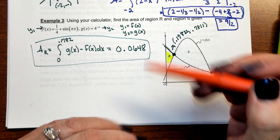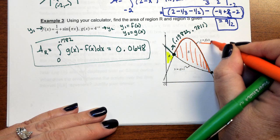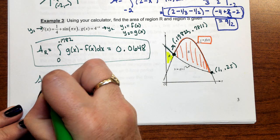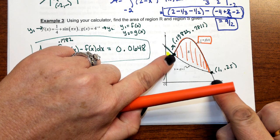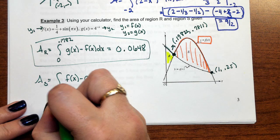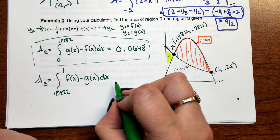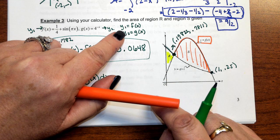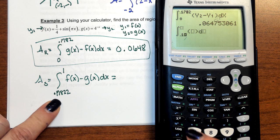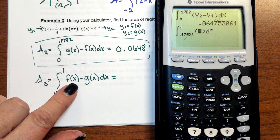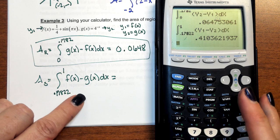Now to calculate the area of region S — that's the orange region. Notice the function on top is F of X. So the area of region S is going to be F of X minus G of X, because you always want top minus bottom. The lower bound is the X value at the leftmost intersection, 0.17822, and the upper bound is 1. F of X is under Y1, G of X is under Y2. So on the home screen it's Y1 minus Y2 dx, giving 0.4104.